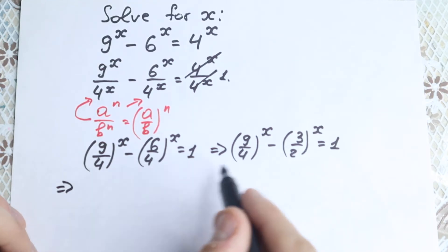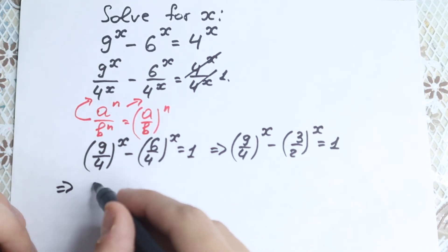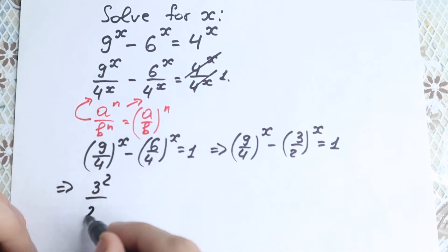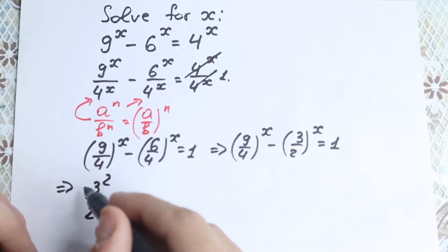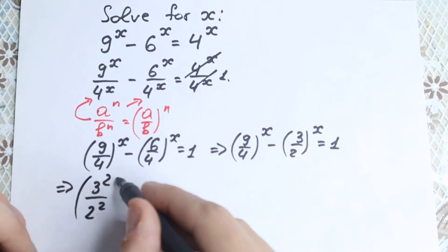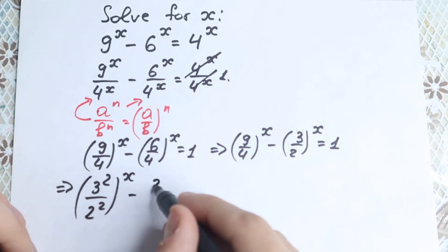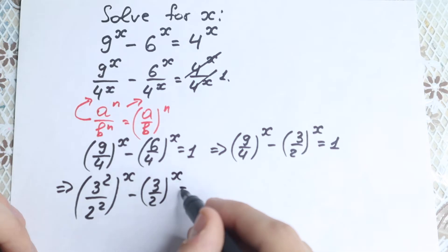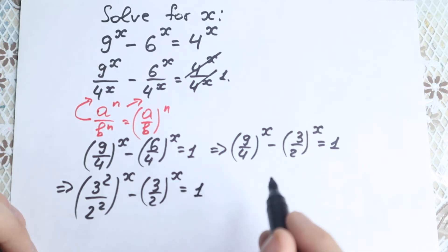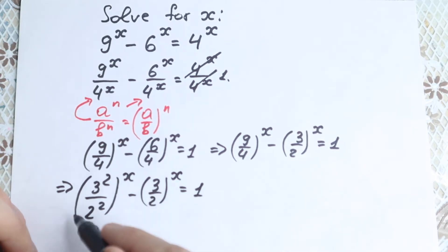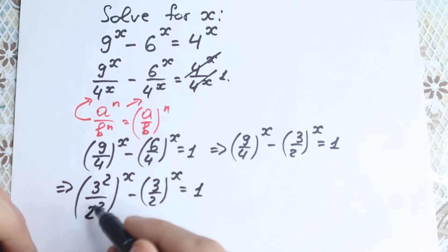Let's write 9 as 3 squared and 4 as 2 squared, all raised to the power x, minus 3 over 2 to the power x, equal to 1. As you can see, this is a good expression, but right here we have a little bit of difficulty. So how can we rewrite this?